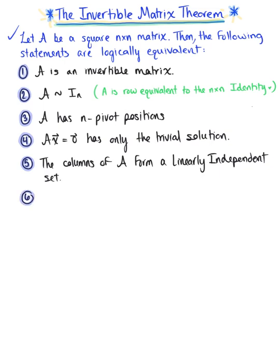These statements are logically equivalent to saying that the linear transformation mapping vector x to matrix A times vector x is one-to-one. So the linear transformation T that maps vector x to matrix A times vector x, the image of vector x under the action of T, is a one-to-one mapping.